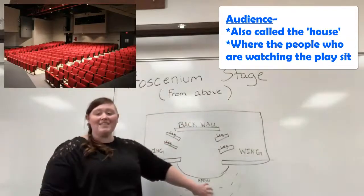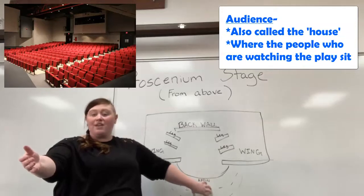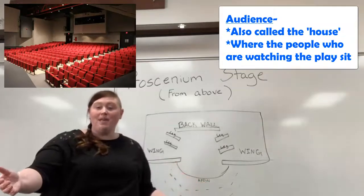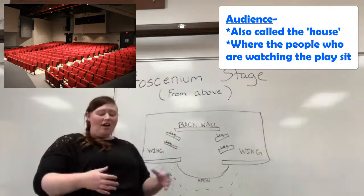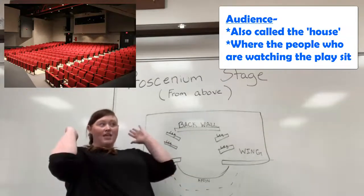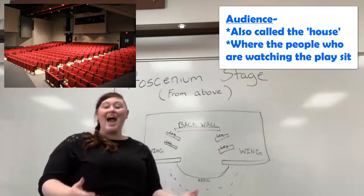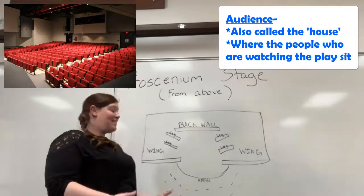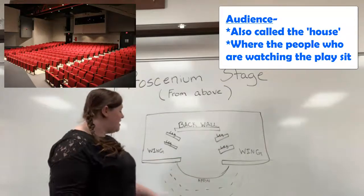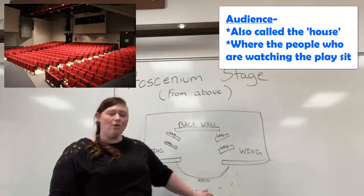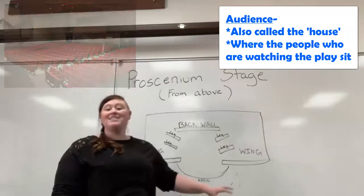Where the audience sits is also called the house. You've been to a movie theater — many of you might have even been to traditional stage theaters. The audience sits and they're generally all facing one direction, towards the play, towards the action of the play. In this instance, we are facing towards the proscenium. So the audience and the house — those words are interchangeable — and that is where the audience sits.